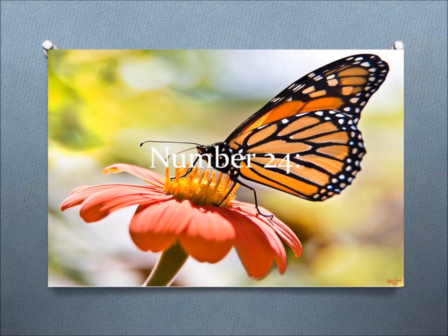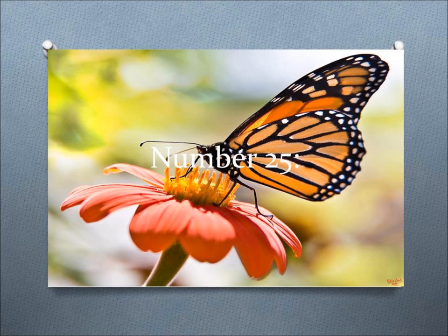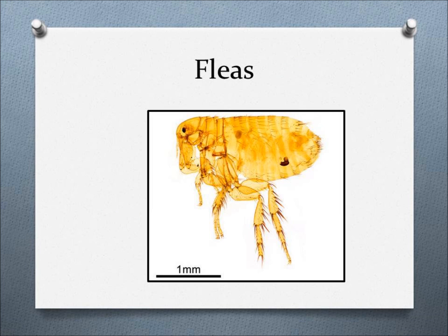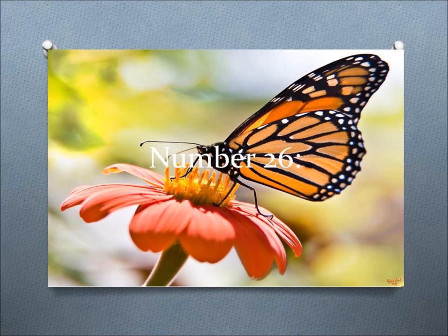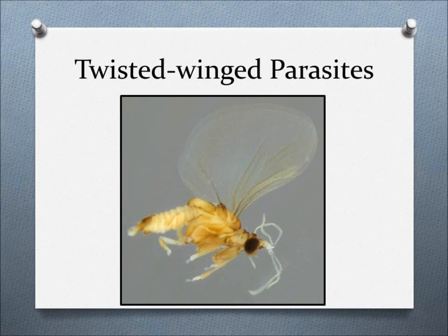Number 24, Raphidioptera. This order includes snake flies, insects that are given their name by the long prothorax, giving them a snake-like appearance. Number 25, Siphonaptera. This order includes fleas, the annoying parasites of mammals and birds that are very good jumpers. Number 26, Strepsiptera. This order includes twisted-winged parasites that are parasites of other insects.